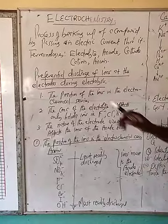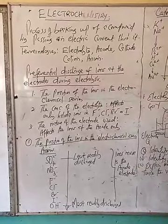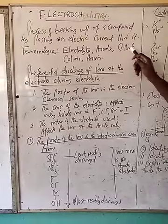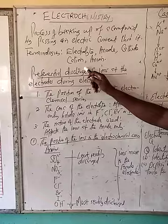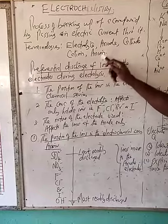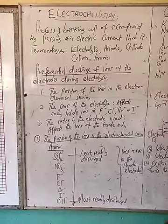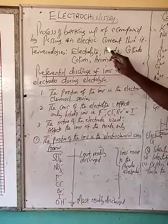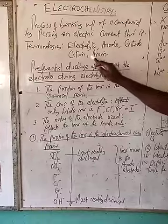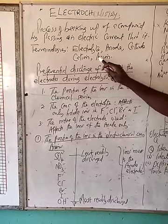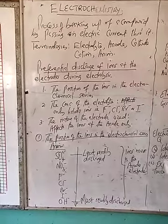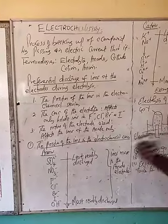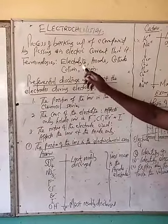You have to be well familiar with these terms: electrolyte, anode, cathode, cations, and anion. These terms we discussed in electrolysis 1. In electrolysis 2, you must know the electrolyte, anode, cathode, cation, and anion. An electrolyte is a liquid or a molten substance which allows electric current to pass through it and eventually it is decomposed.